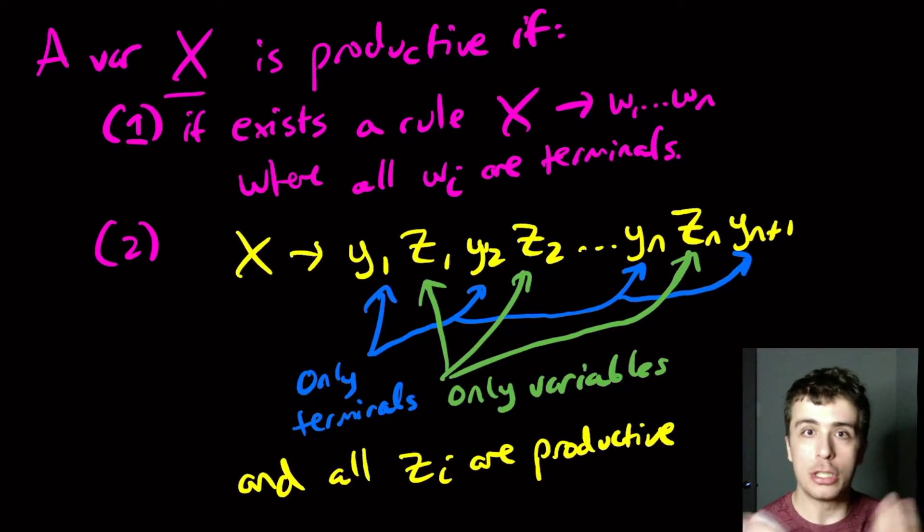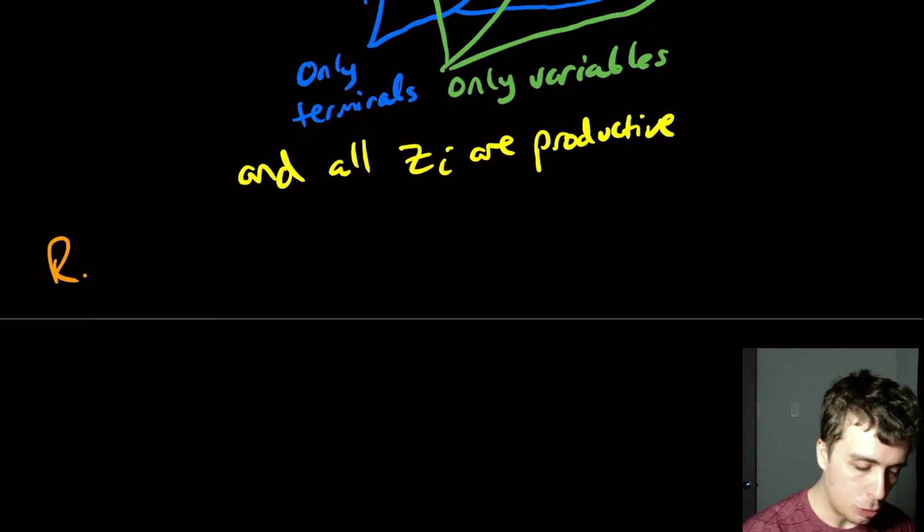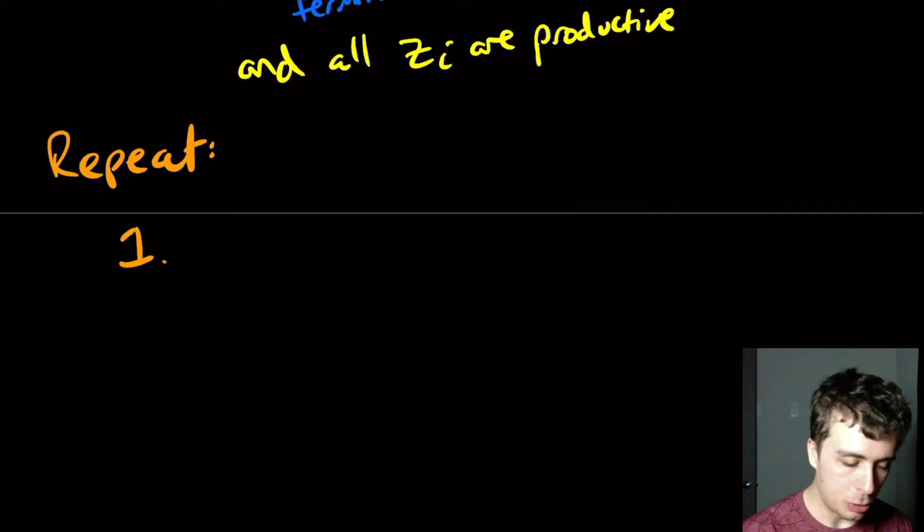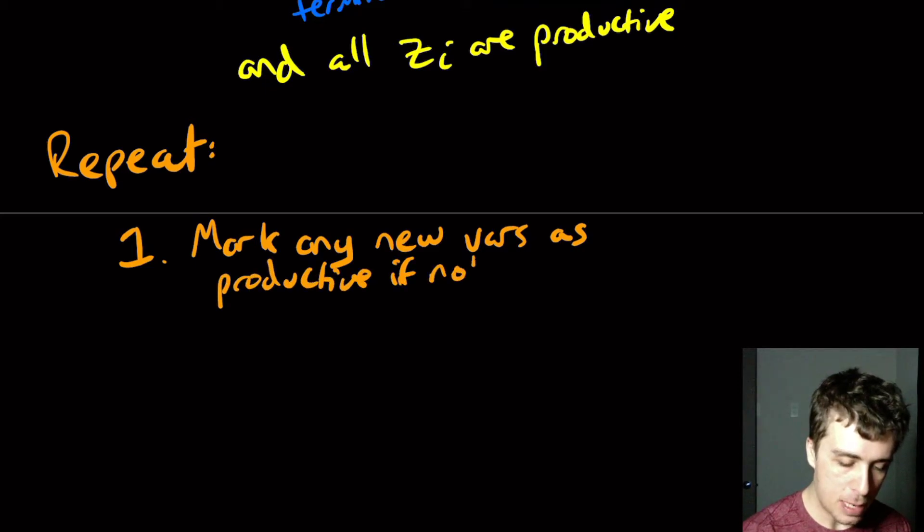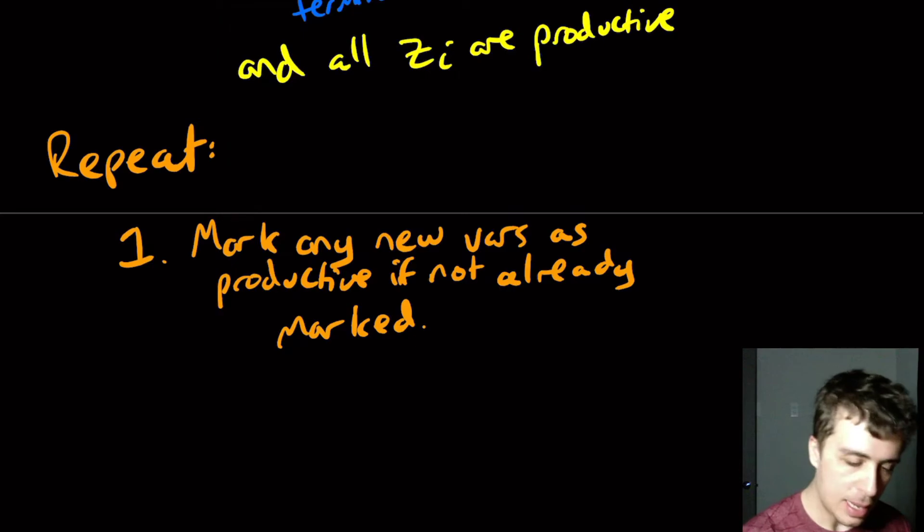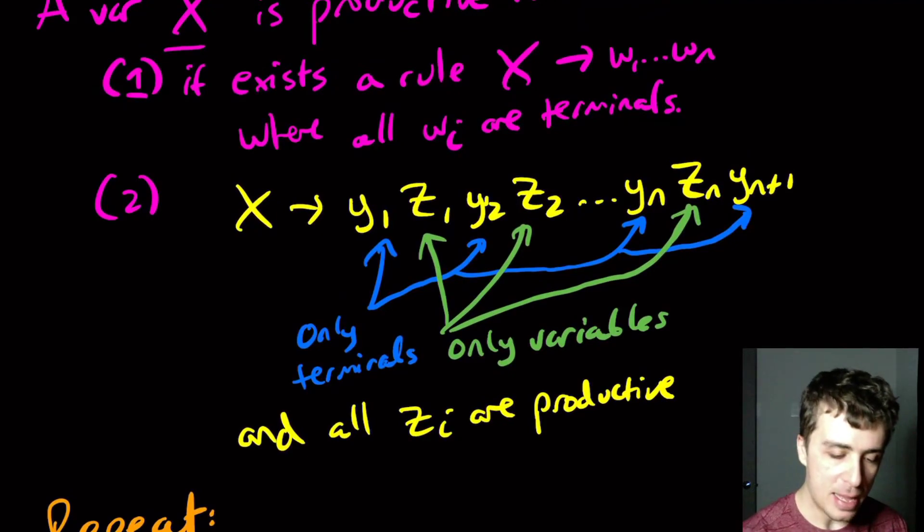Okay, so if x is either it can make a string directly or indirectly, this is just a way of writing it indirectly, then we call x productive. So then how do we actually determine if the start variable is productive? So what we are going to do is we're going to do some repeating. Repeat.